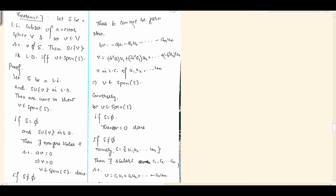Theorem 1.7: Let S be a linearly independent subset of a vector space V, and let v belong to capital V. But this v does not belong to the LI set. Then S union singleton v is linearly dependent if and only if v belongs to span of S.